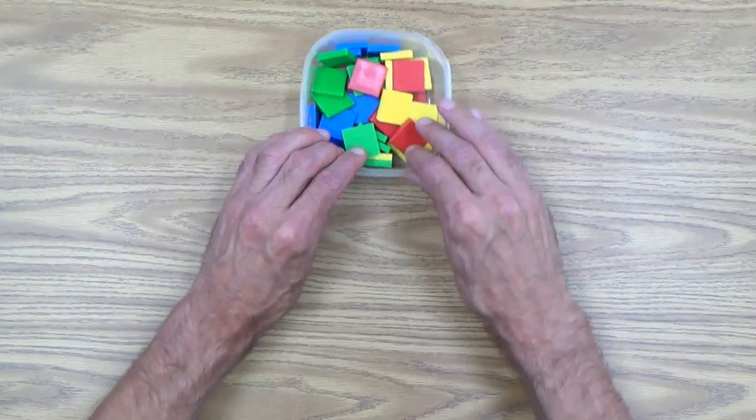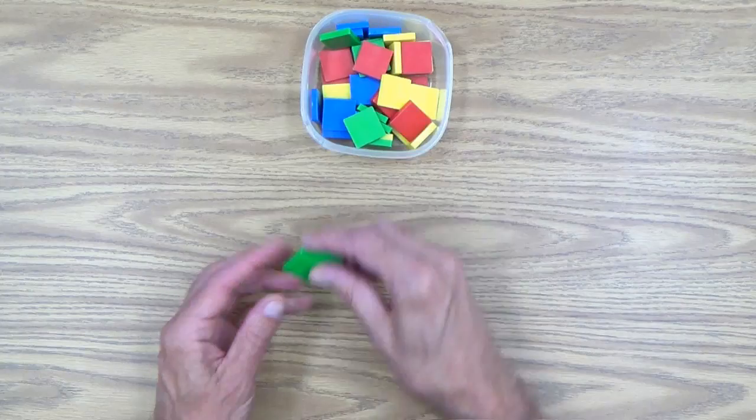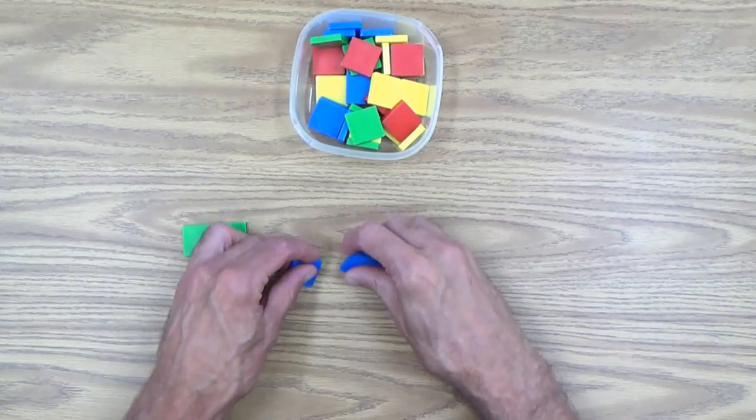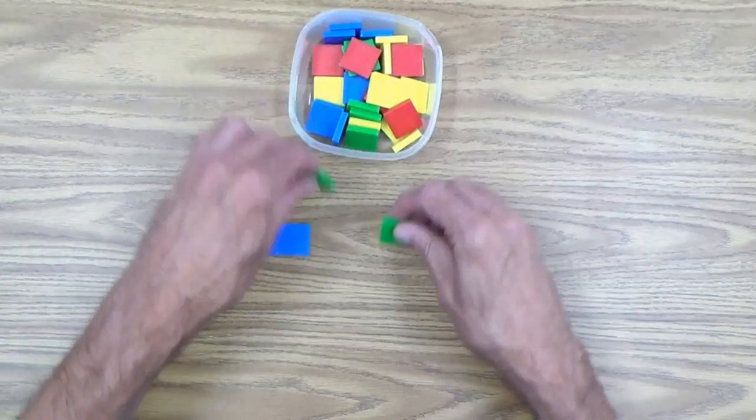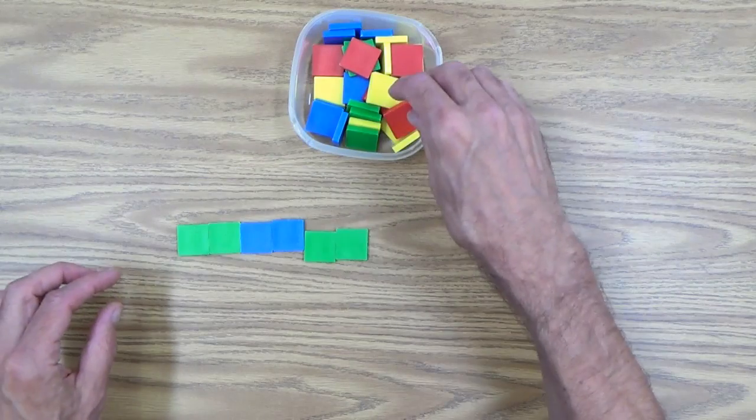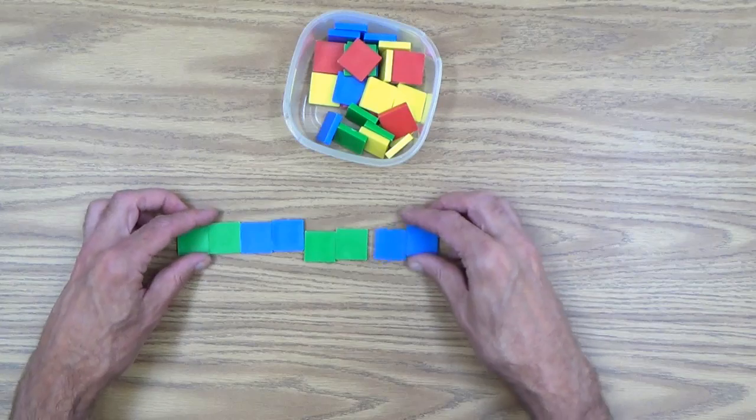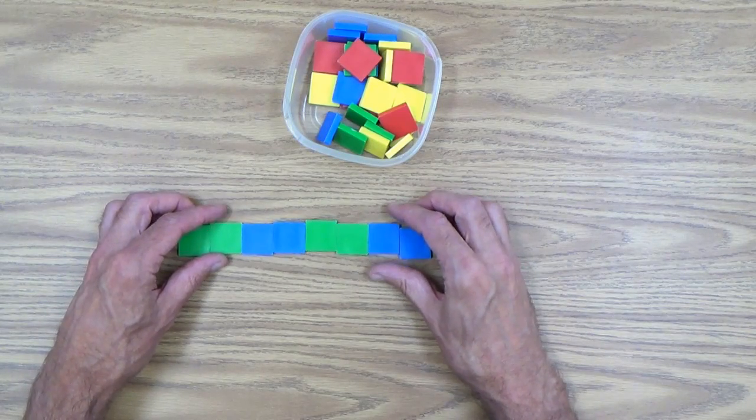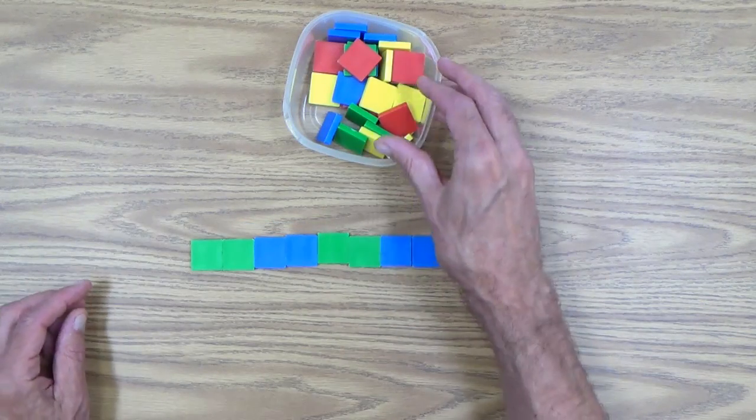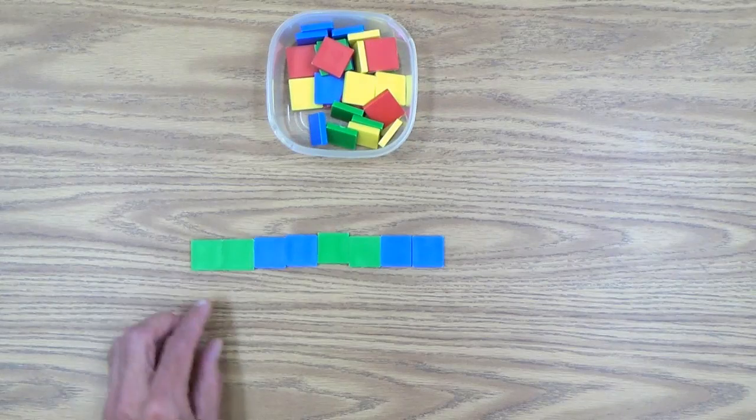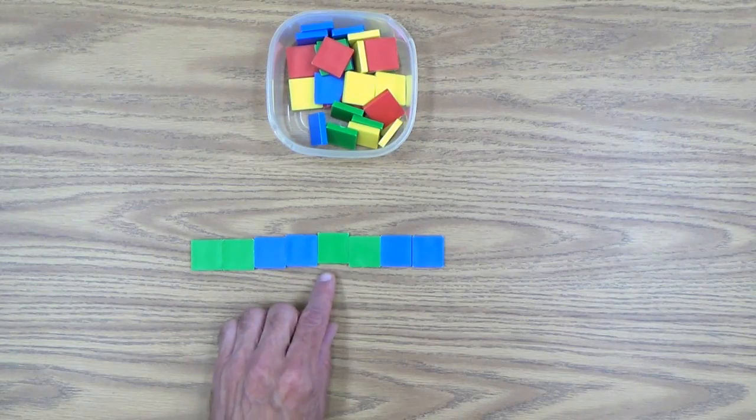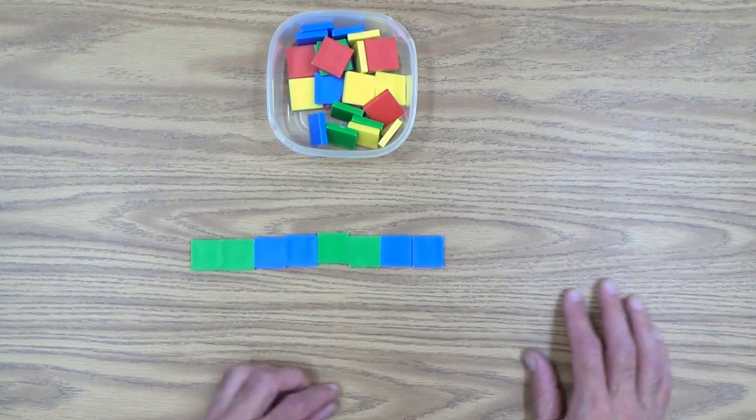Here's another one. Let's try some different colors. Of course, this is another easy one for an adult to recognize, but for your child, it may be a little more difficult. It's green, green, blue, blue, green, green, blue, blue. And, of course, it would go on and on.